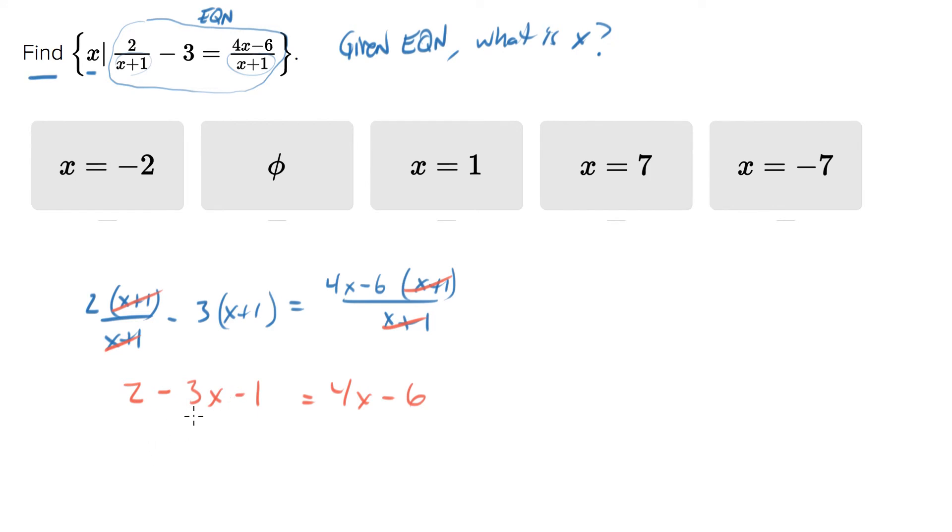So let's collect terms here and what you'll end up with is two minus one is one. Add six to both sides, so one plus six is seven, and we'll end up with on the right side seven X. Divide both sides by seven, and you end up with one equals X.